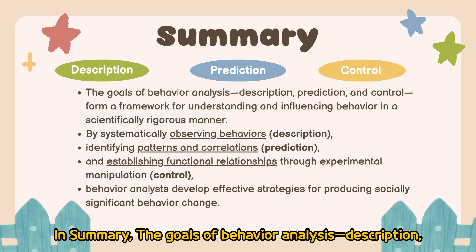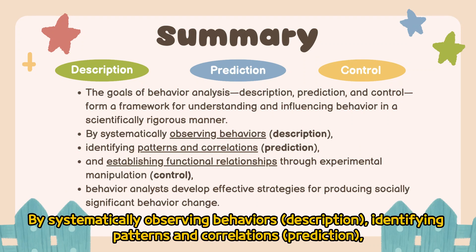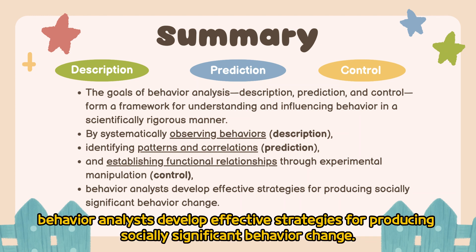In summary, the goals of behavior analysis — Description, Prediction, and Control — form a framework for understanding and influencing behavior in a scientifically rigorous manner. By systematically observing behavior (description), identifying patterns and correlations (prediction), and establishing functional relationships through experimental manipulation (control), behavior analysts develop effective strategies for producing socially significant behavior change.